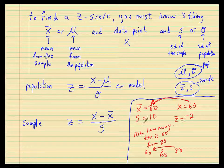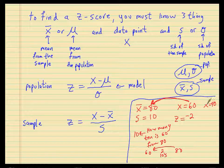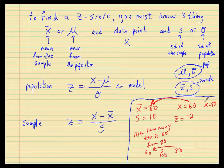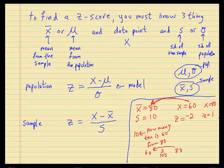Let's say your score was a 90. How many standard deviations is 90 from 80? How many tens away is 90 from 80? You would say: I'm one ten away — one standard deviation away. So your z-score would be positive 1.